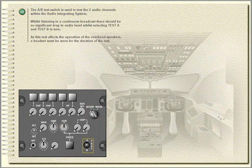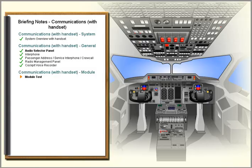The AB test switch is used to test the two audio channels within the audio integrating system. Whilst listening to a continuous broadcast, there should be no significant drop in audio level while selecting test A and test B in turn. As this test affects the operation of the overhead speakers, a headset must be worn for the duration of the test.